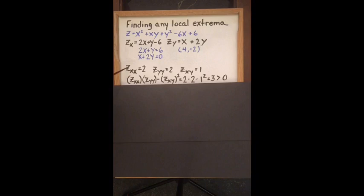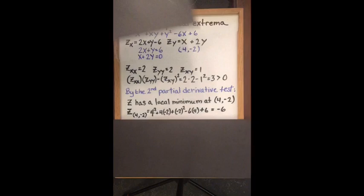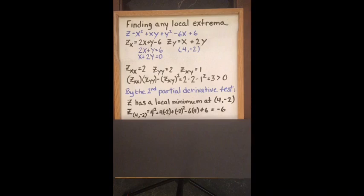The next step is to find f_xx, f_yy, and f_xy. Then we create the discriminant equation where we take f_xx times f_yy and subtract f_xy squared. This value is 3, which is greater than 0. Notice that f_xx is 2, which is also greater than 0. So by the second partial derivative test, z has a local minimum at (4, -2). The actual minimum can be calculated and it is -6.